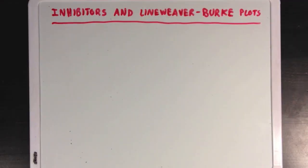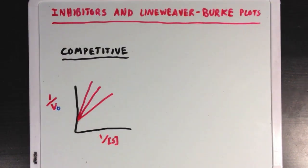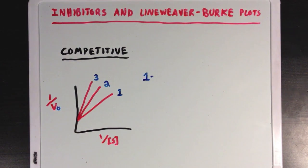So now what we're going to do is take what we just learned about inhibitors and apply it to the Lineweaver-Burk plots. So I'll start with competitive inhibition, and I'll draw out these three lines on the plot, labeled 1, 2, and 3, with line 1 corresponding to the enzyme acting without any inhibitor around. Line 2 will represent some inhibitor being present, and line 3 will represent even more inhibitor being present.